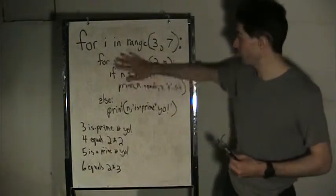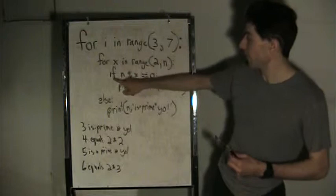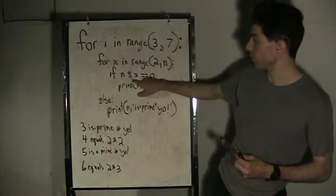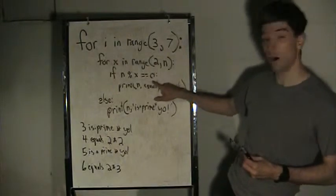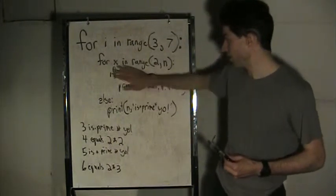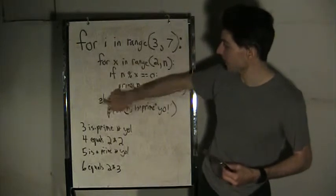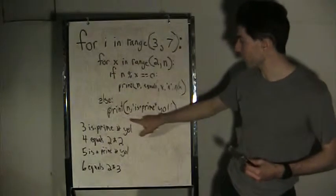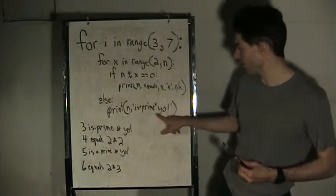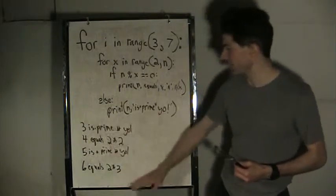...always has a remainder, so it would never equal zero. So it would skip that and pop into this else clause, which is related to this for loop, and print '5 is a prime number, yo!' And it goes through all that. If you made this b value 701, it would print out all the primes from 3 to 700.